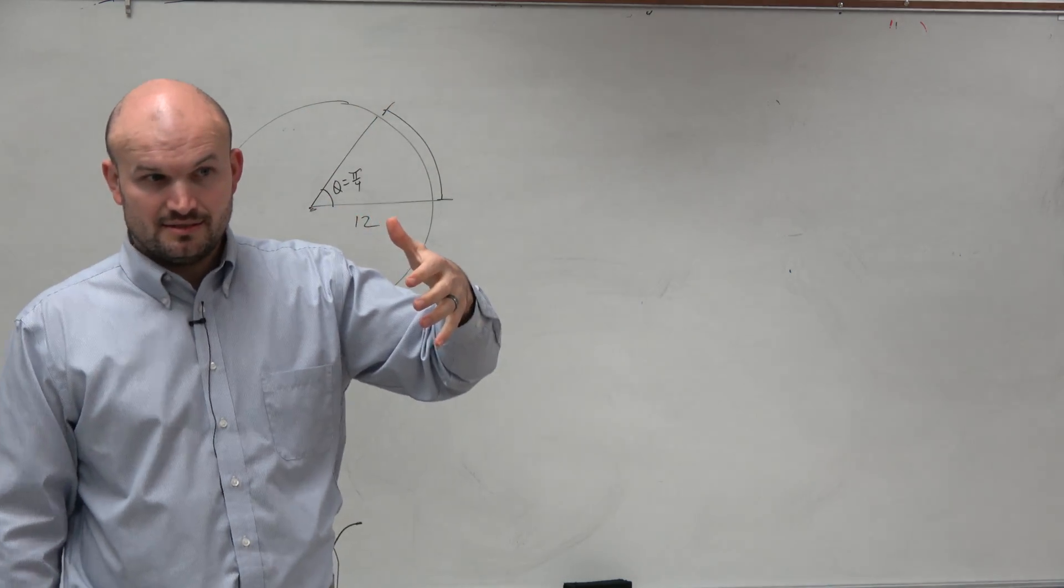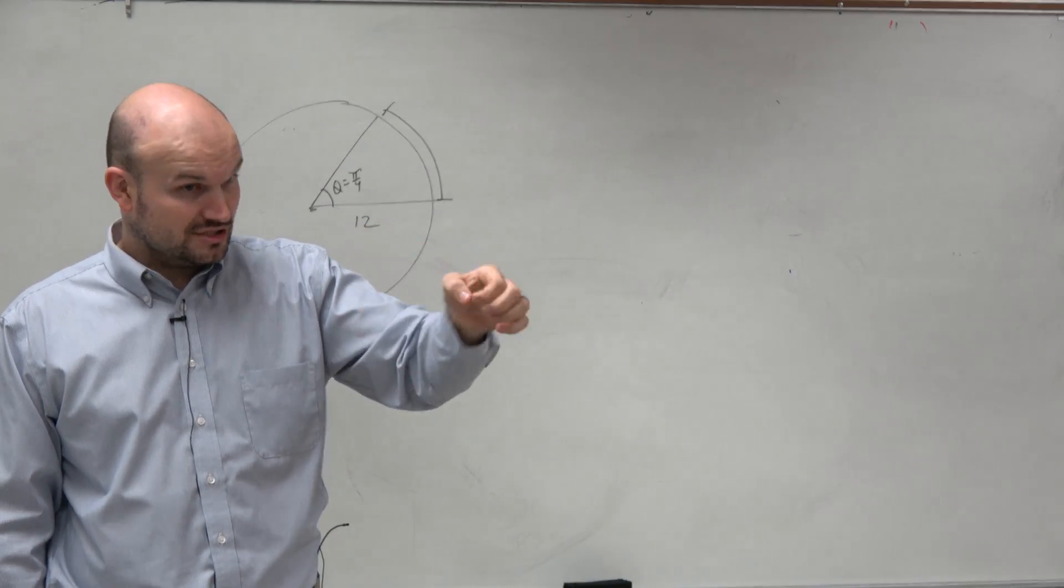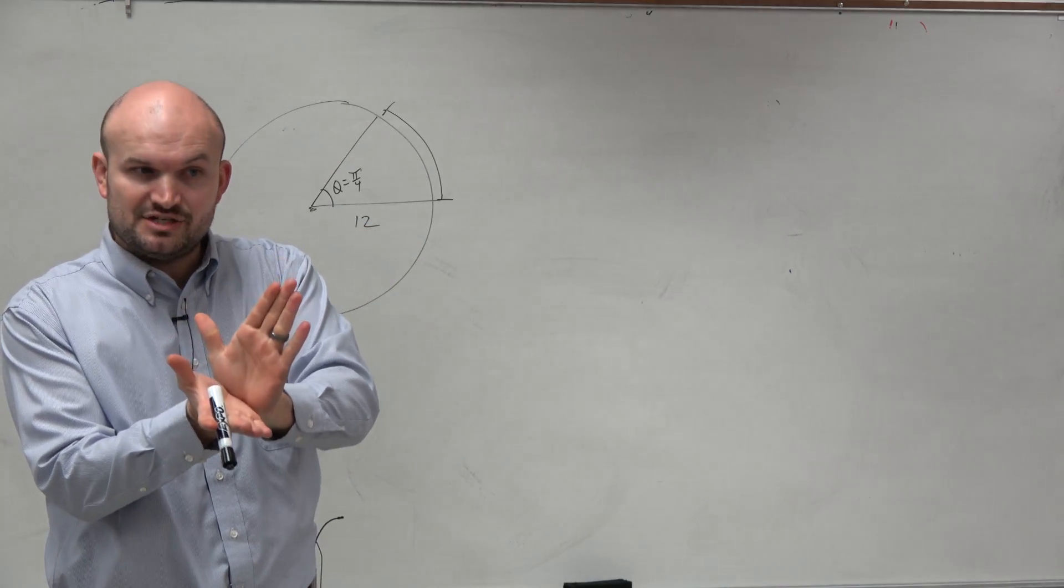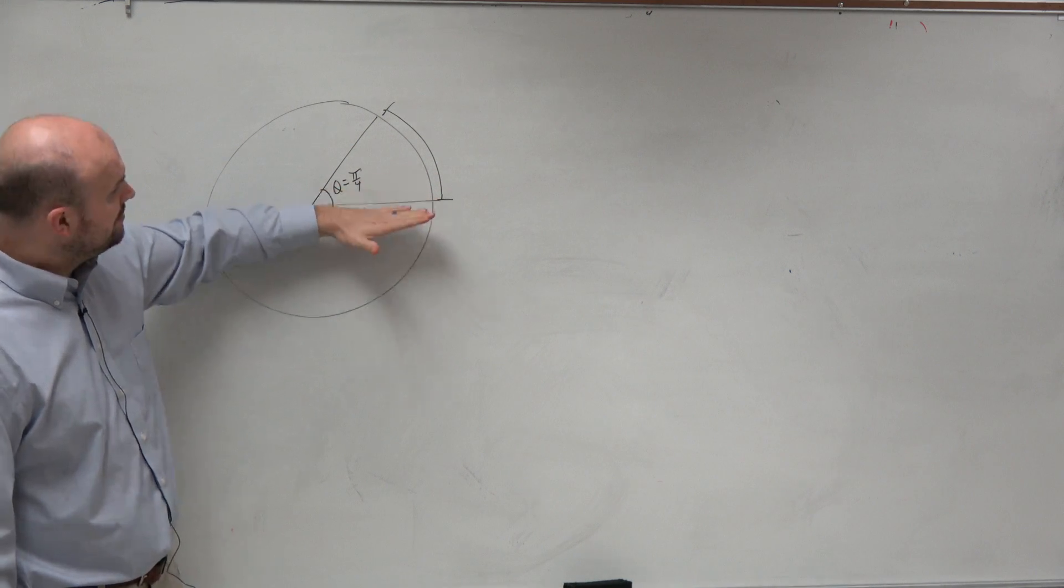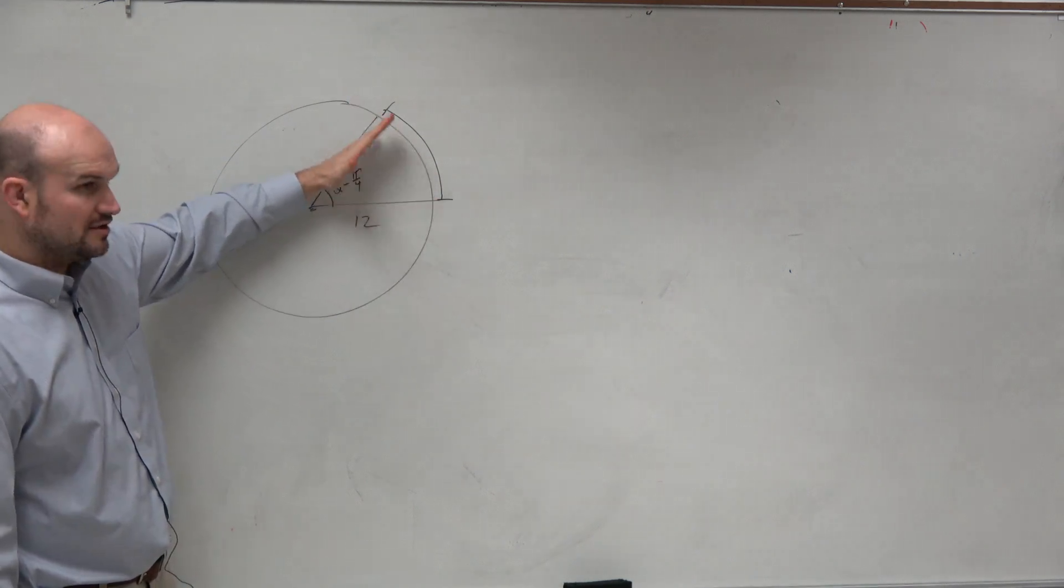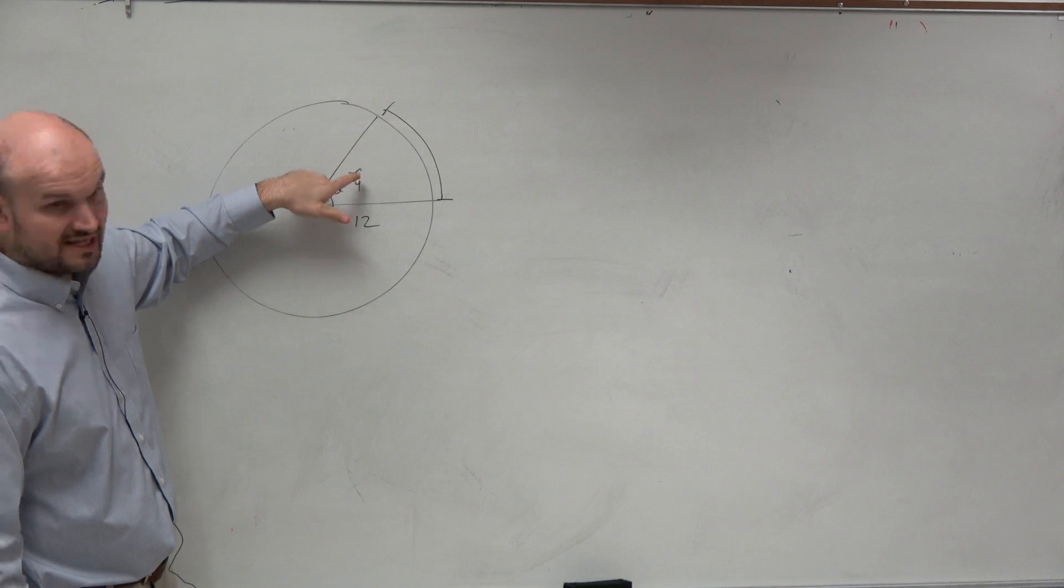But remember, radians, just like degrees, is a measurement of rotation. So when we're talking about radians, we're basically talking about the rotation between these two rays, this measurement, which in this case is pi over 4.